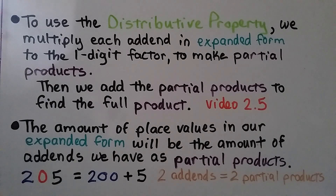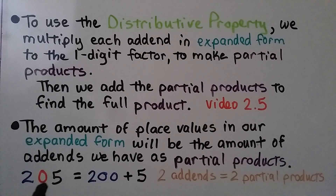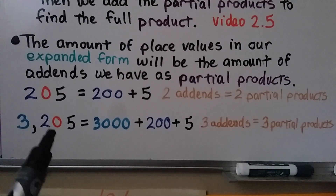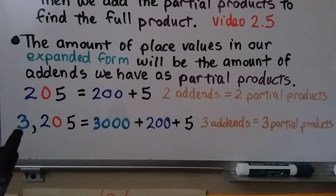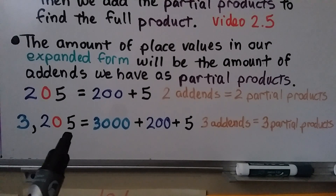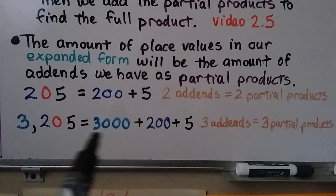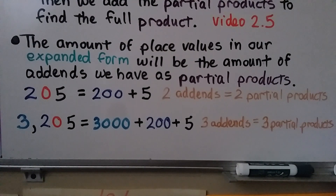For 205, it equals 200 plus 5 — there are only 2 addends and 2 partial products, because there are 0 tens so we don't list them. For 3,205, we write 3,000 plus 200 plus 5. Again, there are 0 tens so we don't list them in expanded form, giving us 3 addends and 3 partial products.